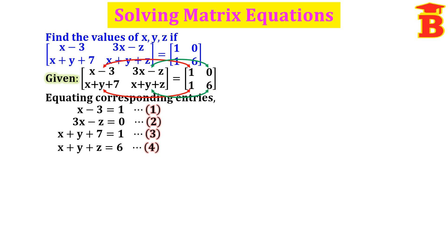Take these as equations 1, 2, 3, 4. So given that the matrices are equal, just equate the corresponding terms and take them as equations 1, 2, 3, 4. Now the question is to find the values of x, y, z — so solve these equations.